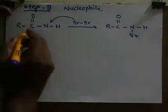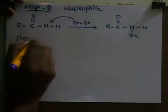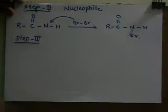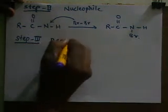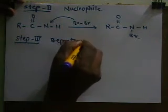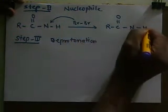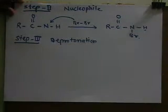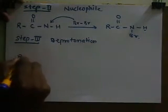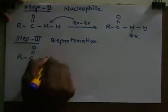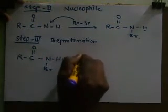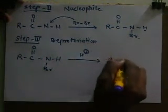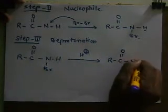As we are carrying out this rearrangement in excess of halogen and excess of alkali, step three is again deprotonation — the second proton present on nitrogen is lost. So RC(=O)NHBr loses a proton to give RC(=O)NBr⁻.